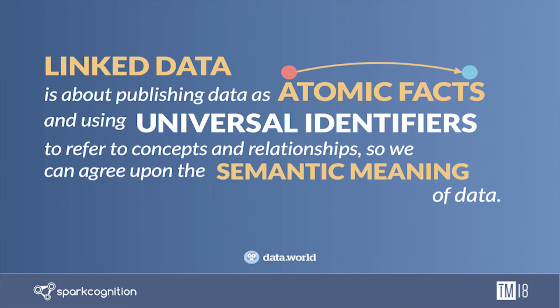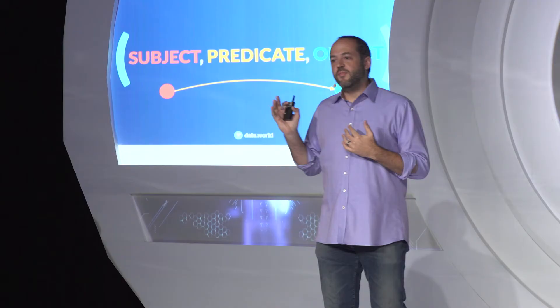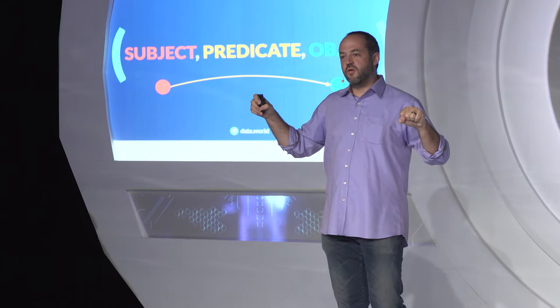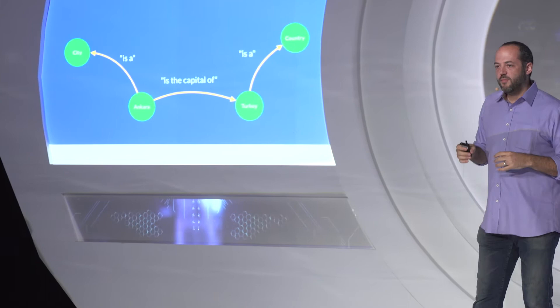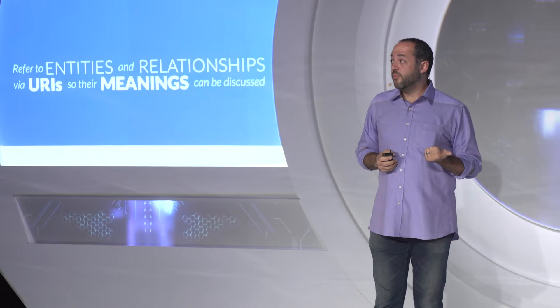The semantic web, or linked data, is about breaking data down into atomic facts, using universal identifiers to represent things, and giving us the ability to have shared semantic understanding of data. Those atomic facts are referred to as triples — simple statements of the form subject, predicate, object. These become a graph-like data structure because you can think of the entities as nodes and the relationships as edges. For example: Ankara is a city, Ankara is the capital of Turkey, and Turkey is a country — those nodes and edges form a graph.